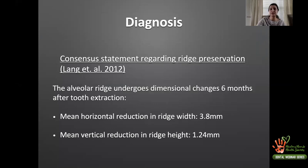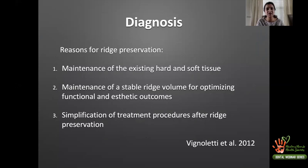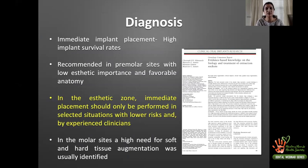The reasons for ridge preservation are to maintain existing hard and soft tissue, to maintain a stable ridge volume for optimizing aesthetics and function, and thereby simplifying subsequent treatment procedures. Hämmerle's group recommended that immediate implant placement in premolars is reasonable given relatively low aesthetic importance and favorable anatomy. However, even this group recommends caution in the aesthetic zone, where immediate implant placement should only be performed in selected situations with lower risk and by experienced clinicians.